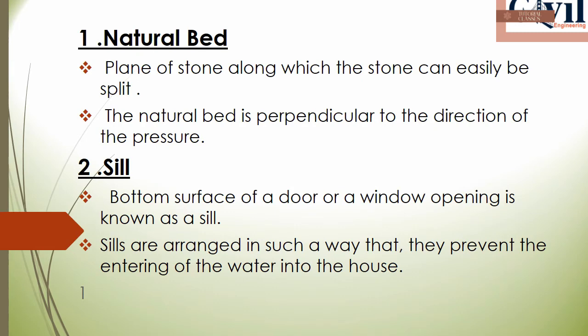Now we are going to discuss the technical terms of stone masonry. The first one is natural bed. The natural bed refers to the direction or plane of pressure within the stone, along which the stone can be split.